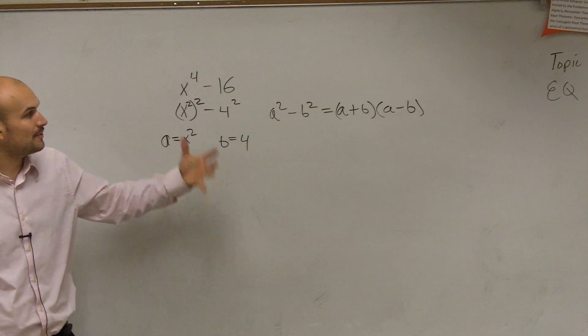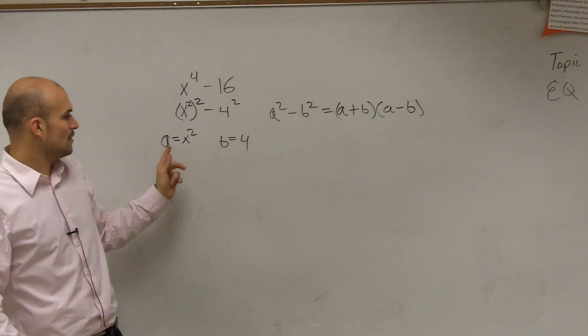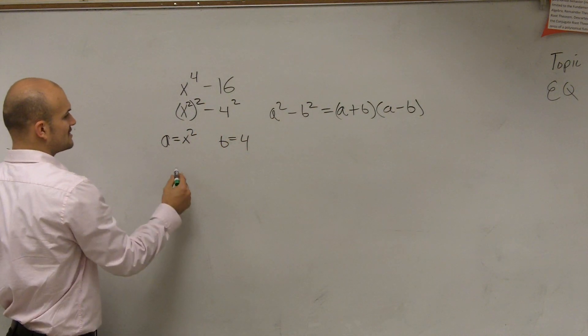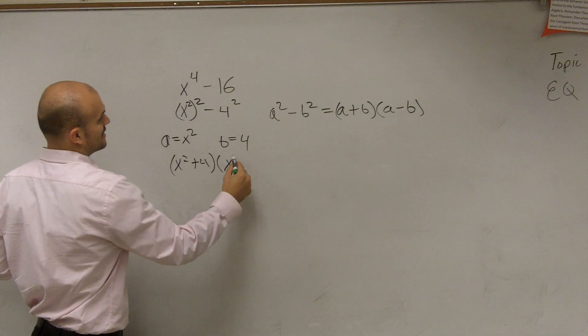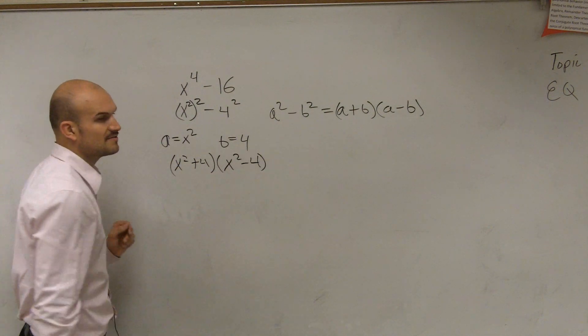So now I rewrote it into this format. So I know what a is and I know what b is. So the factored form of this is x squared plus 4 times x squared minus 4.